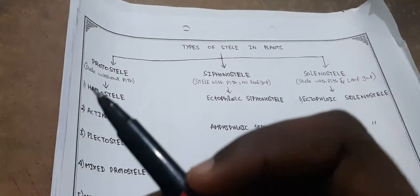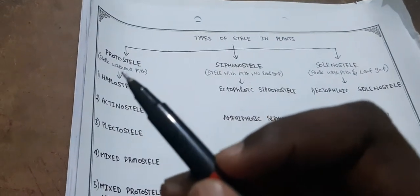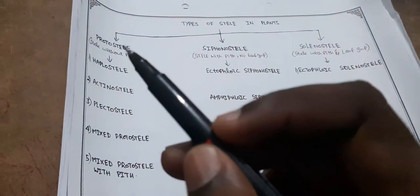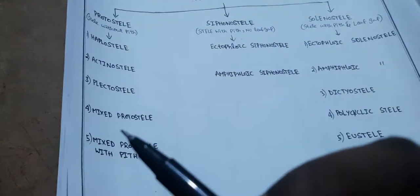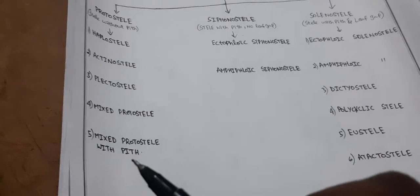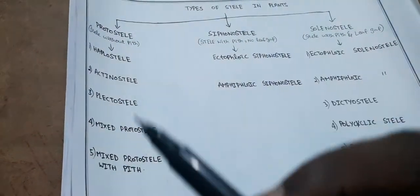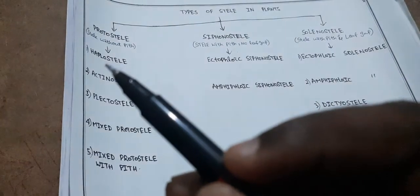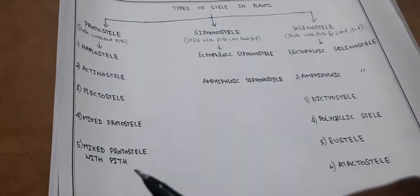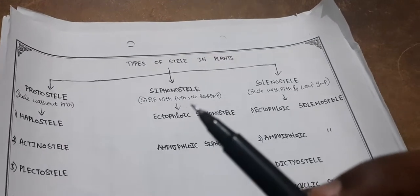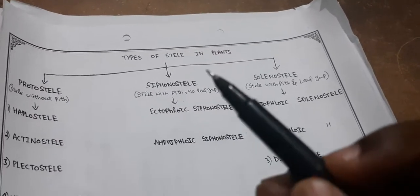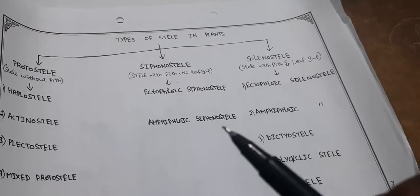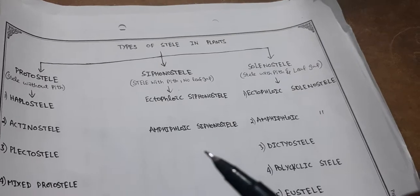First, protostele — this stele has no pith present in it; it is the primary, ancient stele. Under protostele we have haplostele, actinostele, plectostele, mixed protostele, and mixed protostele with pith. Mixed protostele with pith is the connecting link between siphonostele and protostele. Next, siphonostele is a stele with pith and no leaf gaps; it includes ectophloic siphonostele and amphiphloic siphonostele, and also cladophloic siphonostele.